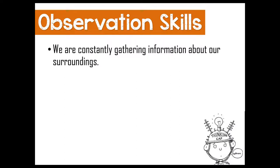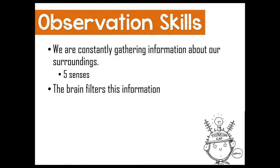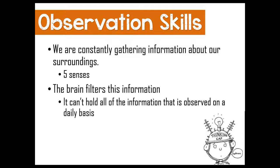We are constantly gathering information about our surroundings. Even now, as you watch this video, there are other things going on around you — for some of you a lot, for others very little. Our brain's job is to filter all that information. We collect it with our five senses, which are always at work, and the brain's job is to filter it — deciding what's important versus what's not.